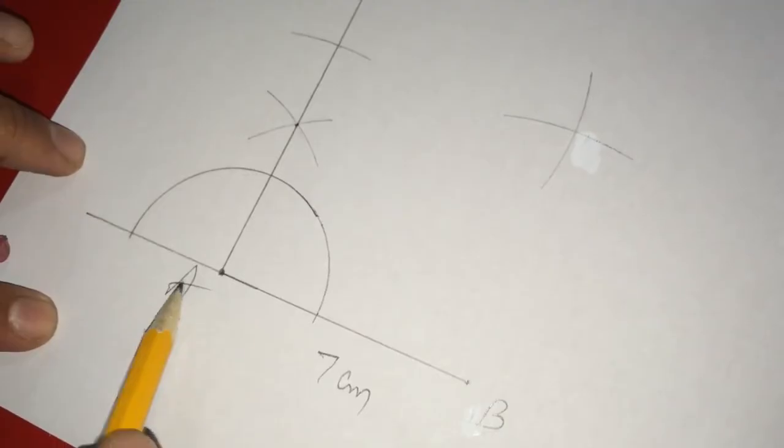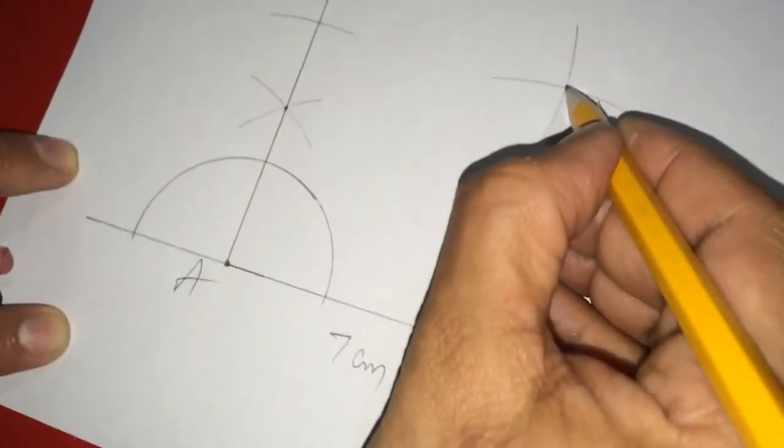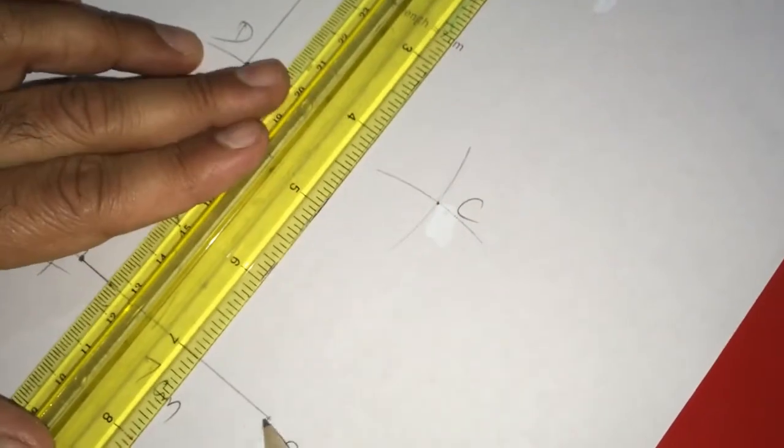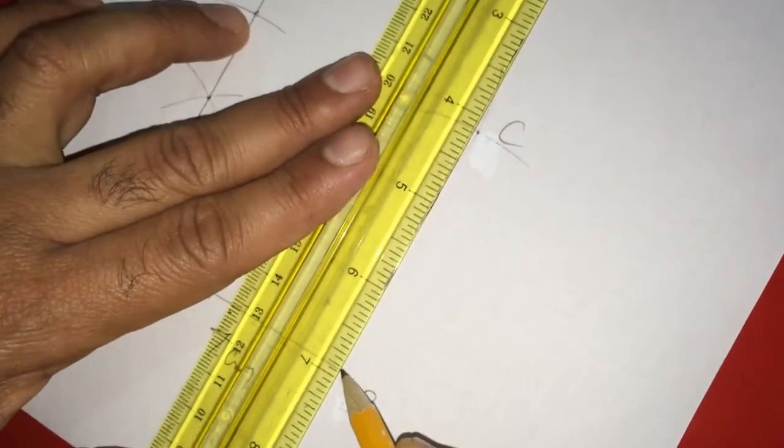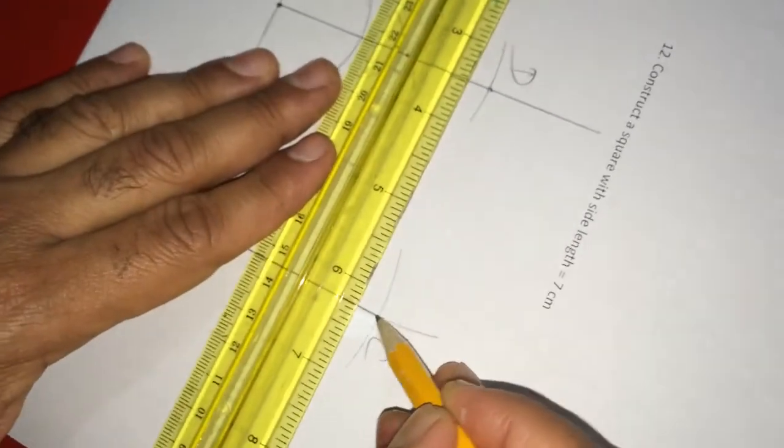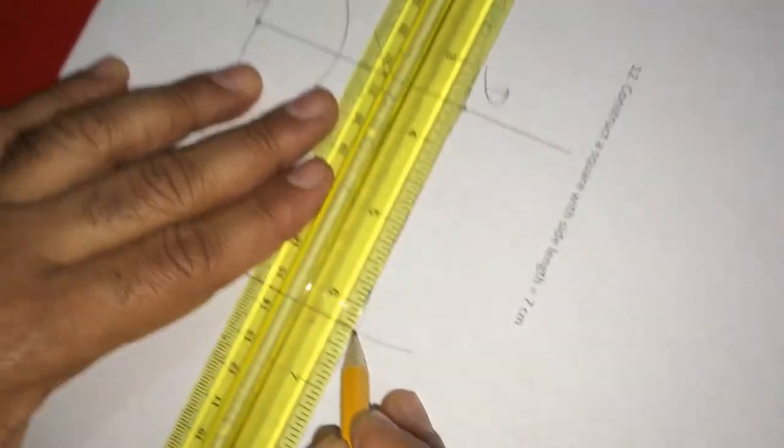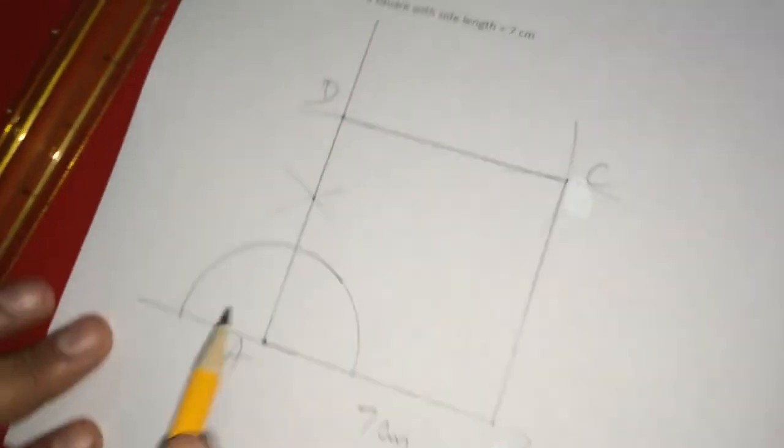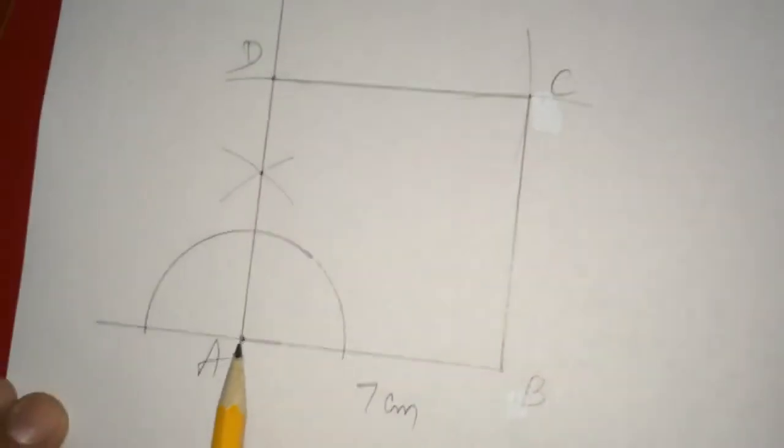And now, I am naming these points. Since it is A and this is B, this point must be C and this you can name it as D. Thereby, if you join this BC, also this CD, you will get a beautiful square like this. And if you measure...